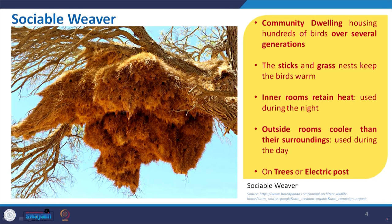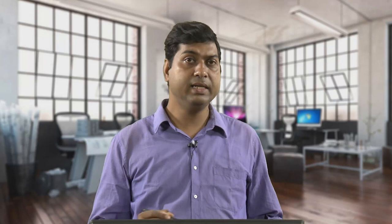We start with the Sociable Weaver. You can see in the image it is a huge structure, normally made with grass or vine-like materials, and sometimes sticks are used to give stability. It is called 'sociable' because it is not a single nest — they believe in community. This represents a community dwelling like mass housing, where they can stay over generations. That is a really good lesson from this kind of structure.